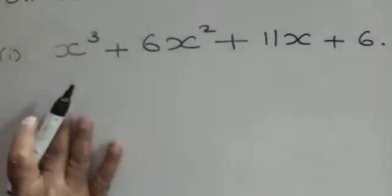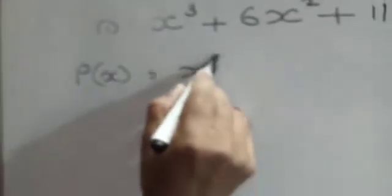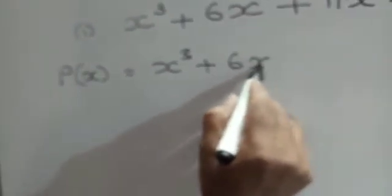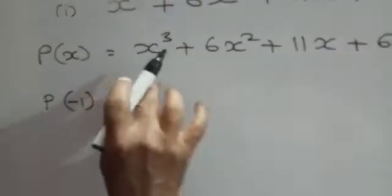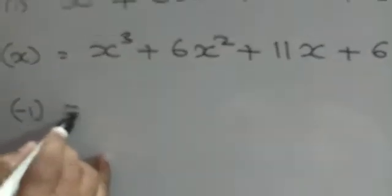A cubic polynomial can have three zeros, meaning it can be factored into three linear polynomials. Let us write the given polynomial as p(x) = x³ + 6x² + 11x + 6. We take the possible factors of 6 and substitute them to find the zeros. We try x = -1, because putting x = 1 gives all positive terms and will not equal zero. So we put x = -1.